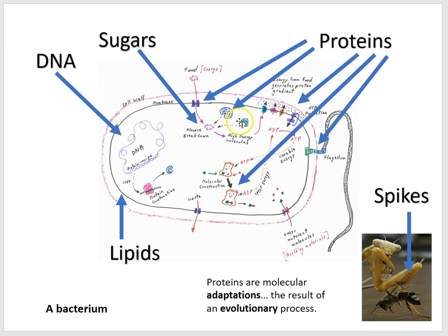Just as the praying mantis has parts with purpose — its spikes allow it to grasp prey, which we call an adaptation — proteins are molecular adaptations. They have evolved through the evolutionary process, which is how they got their purposes and their jobs.